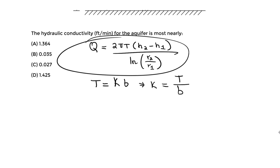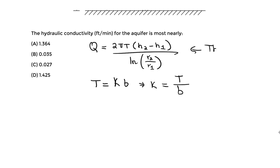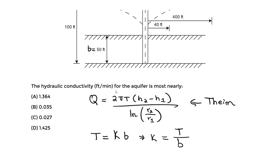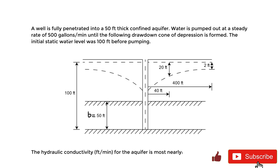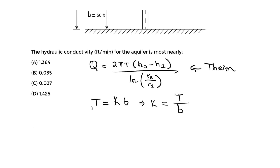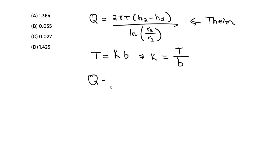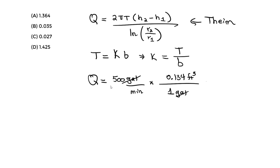First, I'll convert Q from gallons per minute to cubic feet per minute, since everything else is in feet. Q equals 500 gallons per minute. Using the conversion that one gallon equals 0.134 cubic feet (from the handbook), the gallons cancel and Q equals 67 cubic feet per minute. These units will work correctly in the equation.